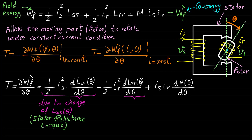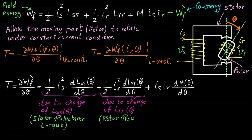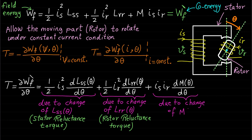The second term, ½·Ir²·dLRR(θ)/dθ, represents the torque component generated because of the change of the rotor self-inductance LRR(θ). The third term, Is·Ir·dM(θ)/dθ, represents the torque component generated because of the change of the mutual inductance M(θ). This component is called the mutual inductance torque component.